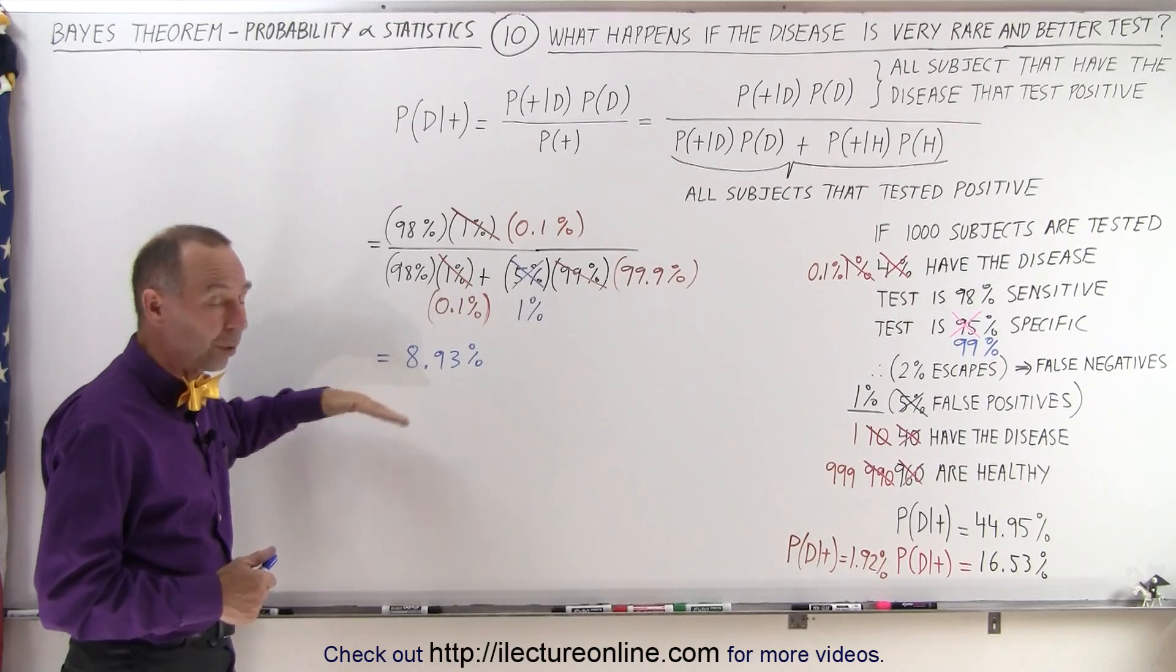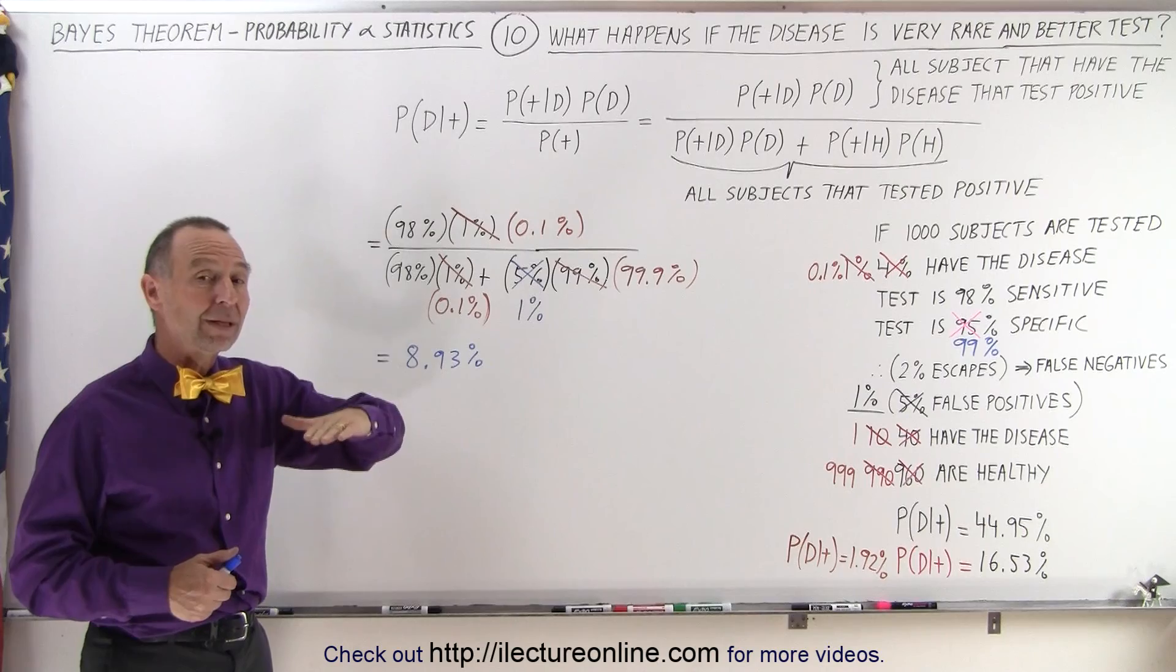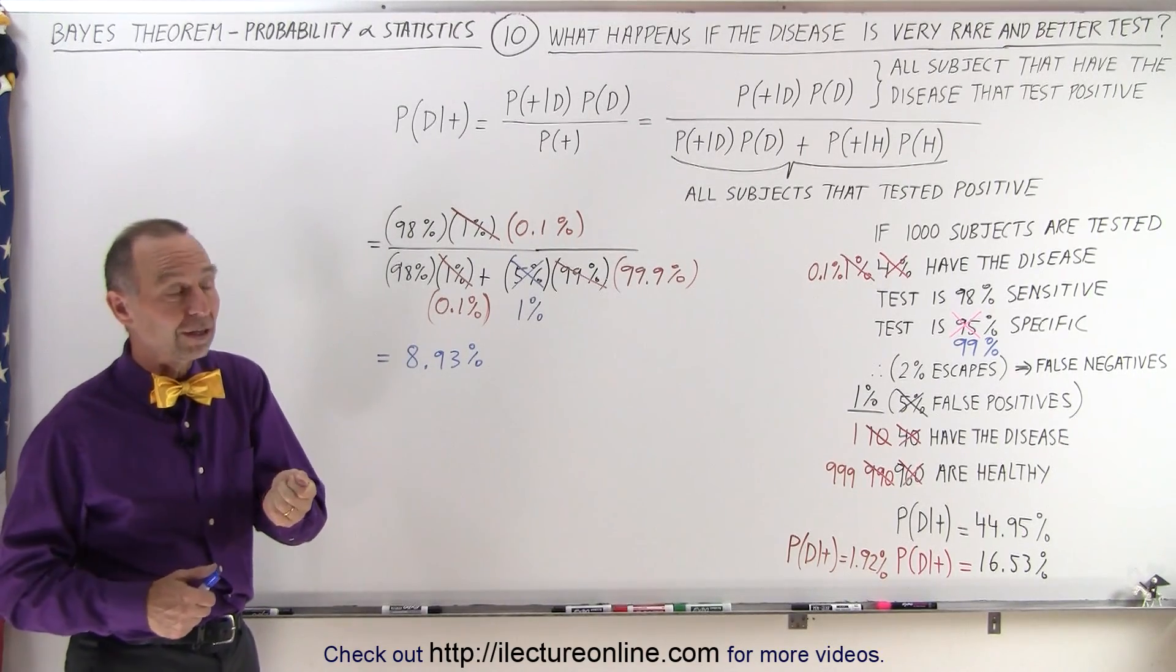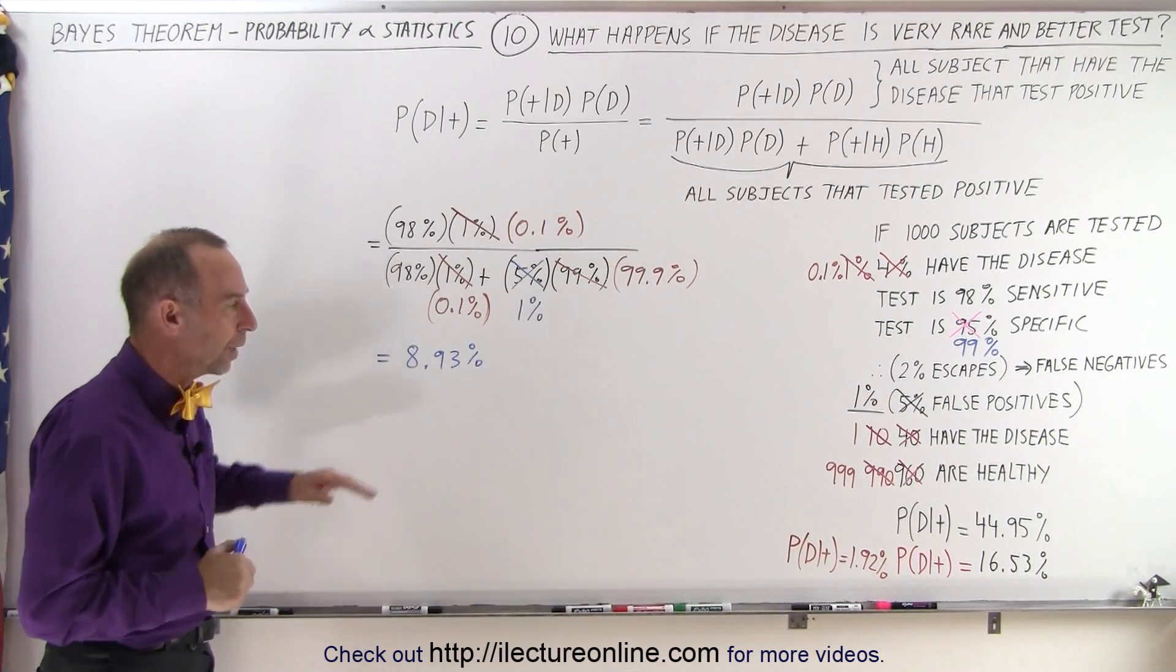What we need to do is run the test over and over and over again. By running the test repeatedly, the probability will begin to increase. If each time we run the test, we still come out positive, then the probability will go up.